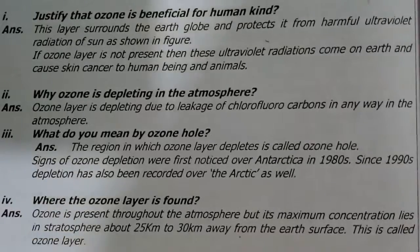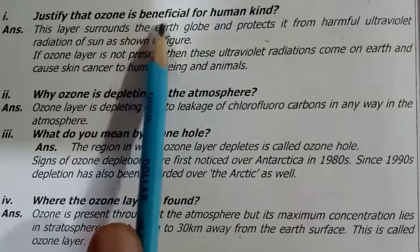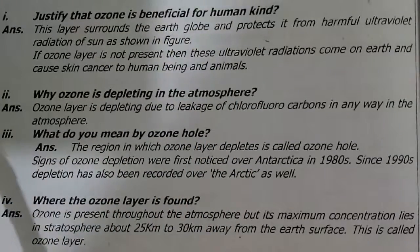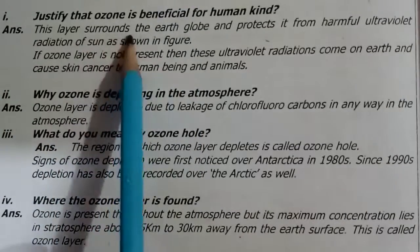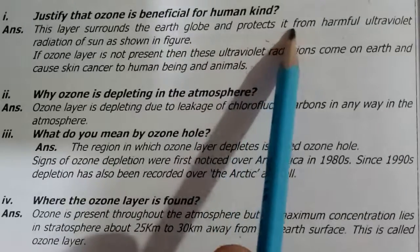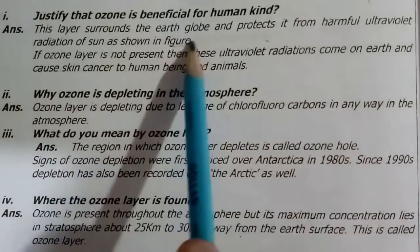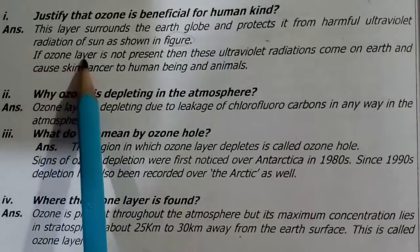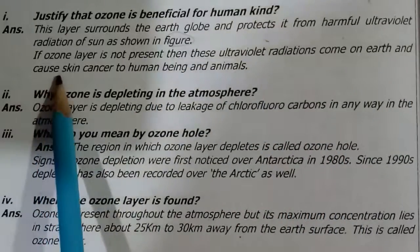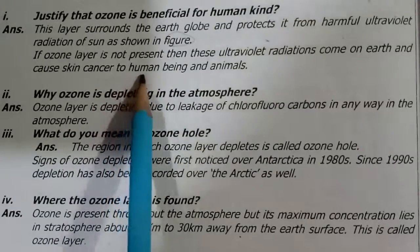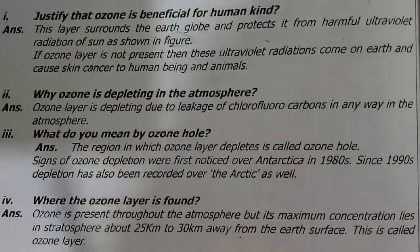Question number 1: Justify that ozone is beneficial for humankind. The ozone layer surrounds the earth globe and protects it from the harmful ultraviolet radiation of the sun, as shown in the figure. If the ozone layer is not present, then these ultraviolet radiations come to the earth and cause skin cancer to human beings and animals. The ozone layer is being saved — you know everything you have read.